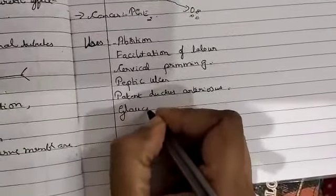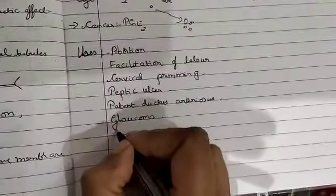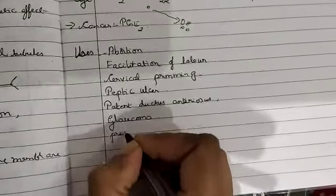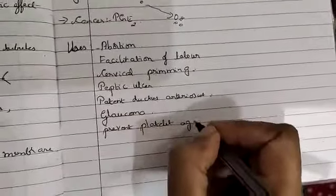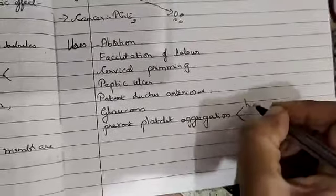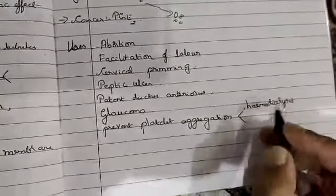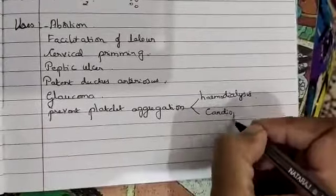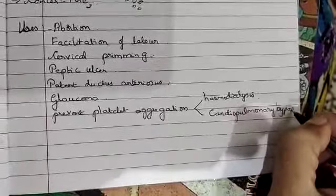Glaucoma, because it is known to decrease the intraocular pressure, then also to prevent platelet aggregation, especially PGI-2, that prevents platelet aggregation especially in persons with hemodialysis and also cardiopulmonary bypass.